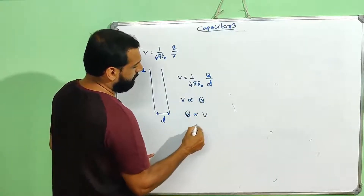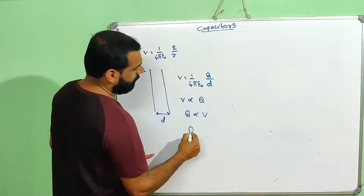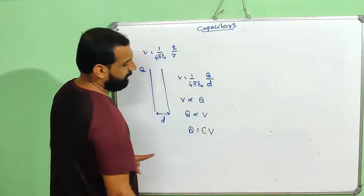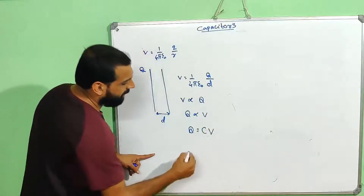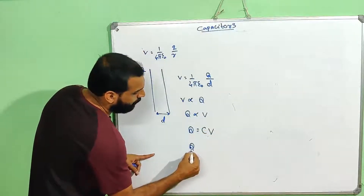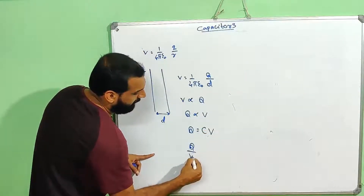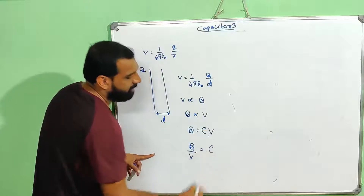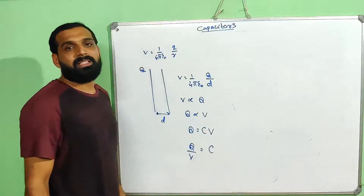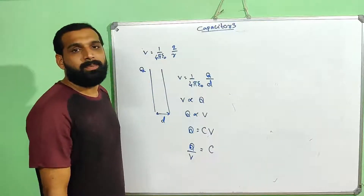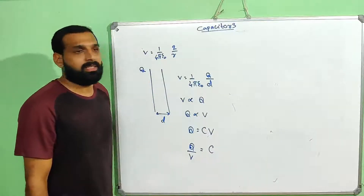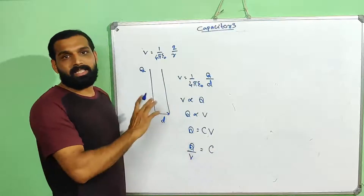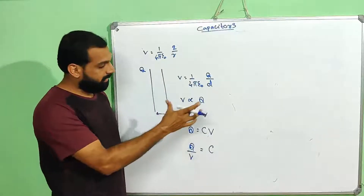This gives us q equal to CV. That means q by V is a constant called the capacitance of that particular capacitor.